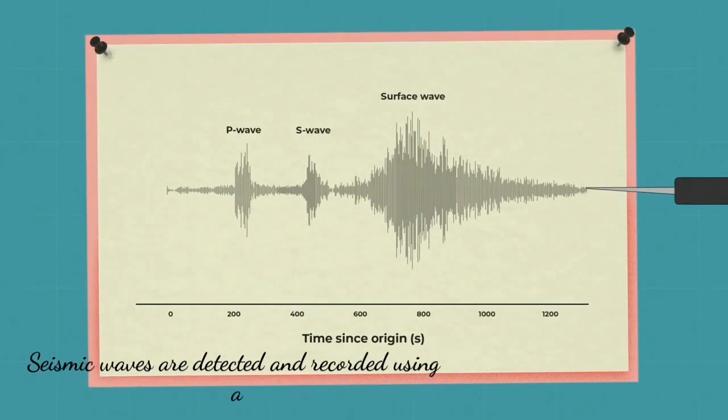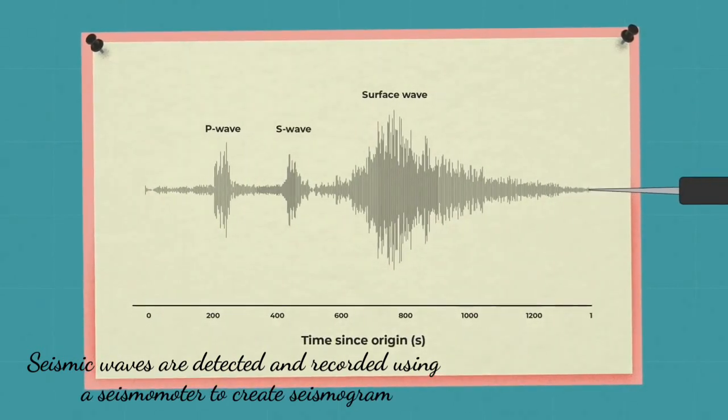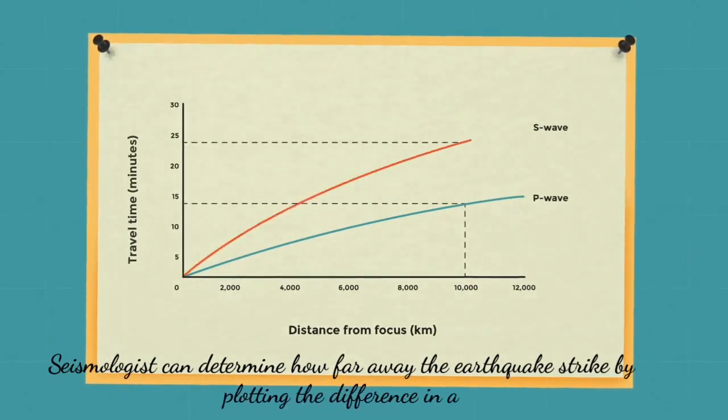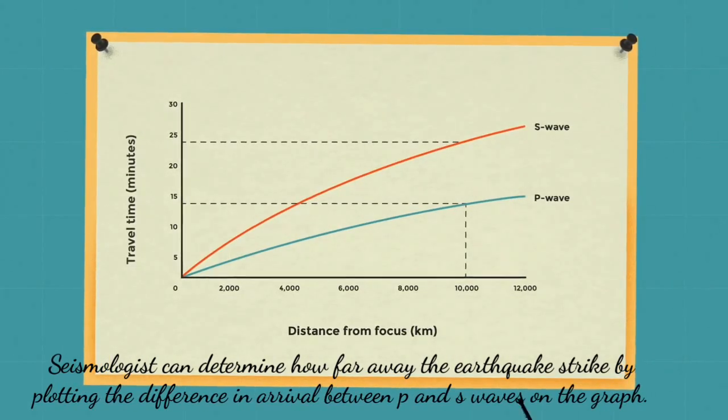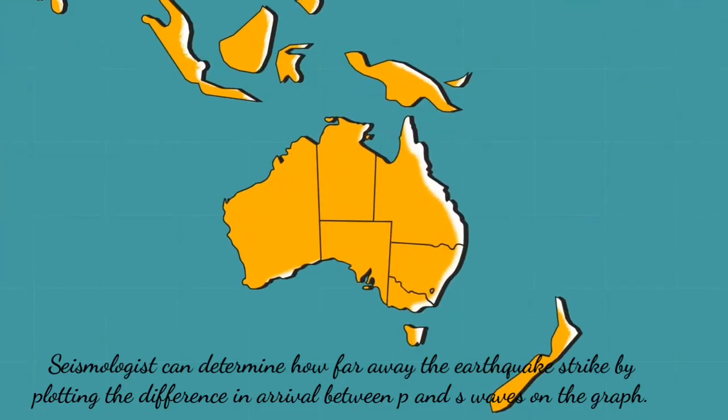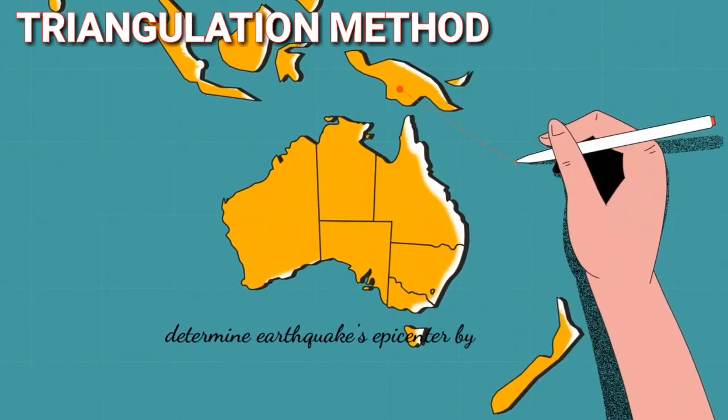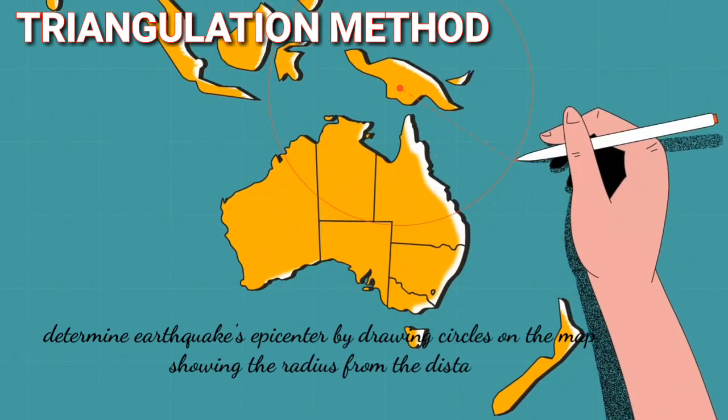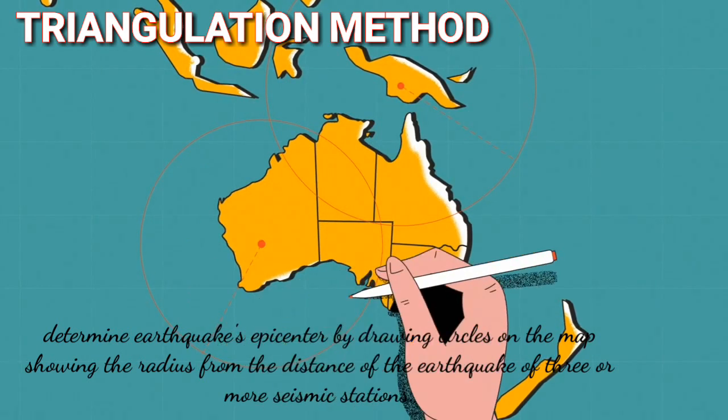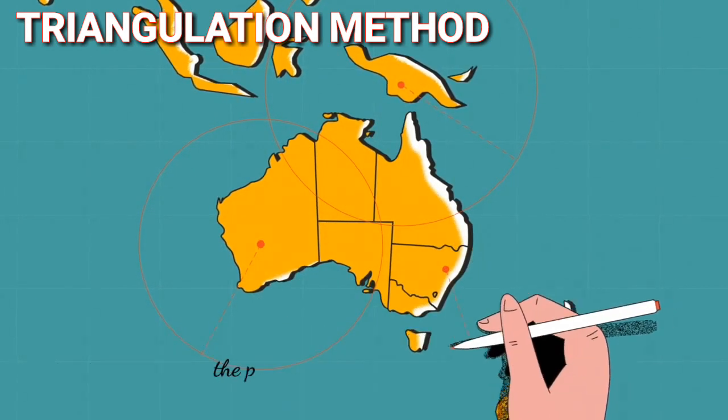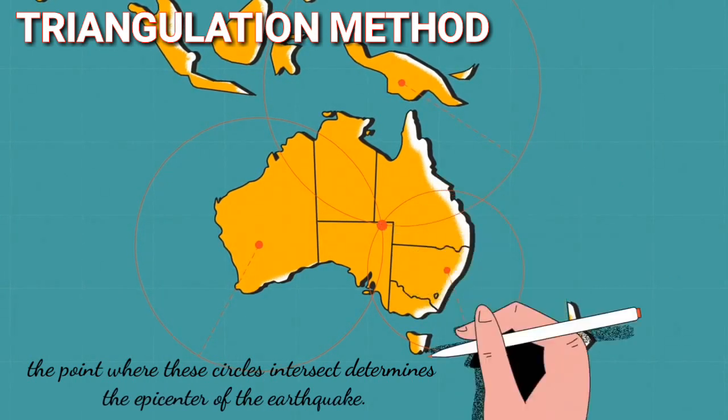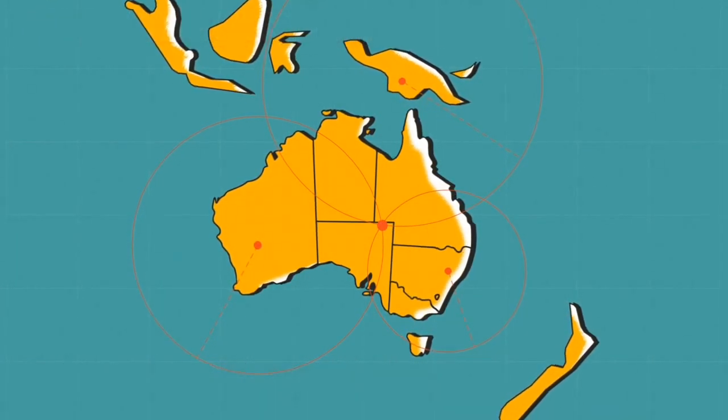Seismic waves are detected and recorded using seismometers to create seismograms. Seismologists can determine how far away the earthquake strikes by plotting the difference in arrival between P and S waves on the graph. Seismologists determine the earthquake's epicenter by drawing circles on the graph showing the radius from the distance of the earthquake of three or more seismic stations. The point where these circles intersect determines the epicenter of the earthquake. This method is known as the triangulation method.